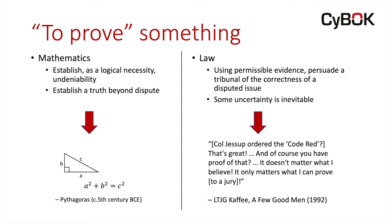In law, on the other hand, when we say we're going to prove something, we're talking about using permissible evidence to persuade a tribunal of the correctness of a disputed issue. In looking at that definition, you should immediately realize a couple of things: one is that some uncertainty remains inevitable, and the second is that we're trying to persuade correctness up to a certain degree.